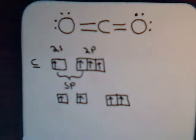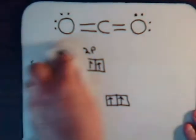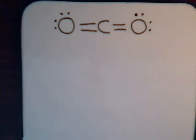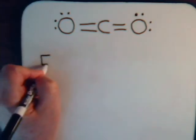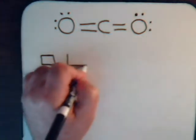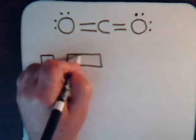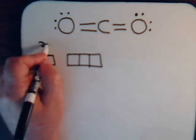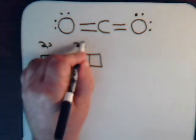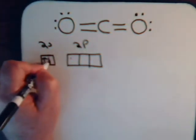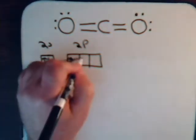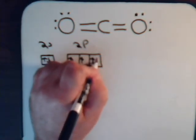Now what about the oxygen atoms? What is their state of hybridization? Let's draw the orbital diagram for oxygen: 2s and 2p.